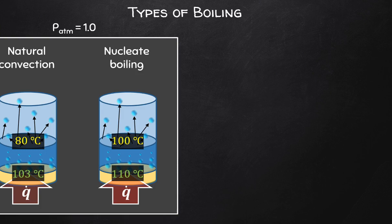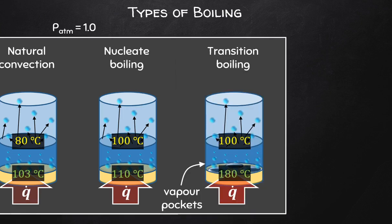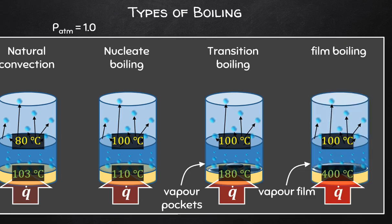The solid-liquid interface during nucleate boiling is superheated — the water there will be above the saturation temperature. The third type is transition boiling, where pockets of vapor begin to form along the solid-liquid interface, which is now well above the saturation temperature. Convection is much more vigorous, with a lot of bubbling fluid and lots of bubbles mixing the liquid. The final phase is film boiling, due to the vapor film that forms continuously at the solid-liquid interface, which is much hotter than the saturation temperature.